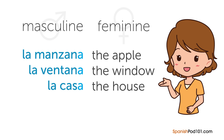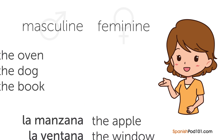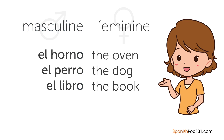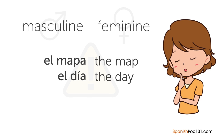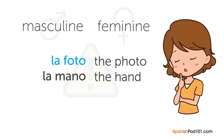Examples of feminine nouns: 'la manzana' the apple, 'la ventana' the window, and 'la casa' the house. Nouns ending in O are generally masculine — 'el horno' the oven, 'el perro' the dog, and 'el libro' the book. However, there are many exceptions: 'el mapa' the map ends in A but is masculine, as is 'el día' meaning the day. Similarly, 'la foto' meaning the photo and 'la mano' meaning the hand both end in O but are feminine. Because of so many exceptions, it's best to learn nouns with their articles: 'el' or 'un' for masculine, 'la' or 'una' for feminine.